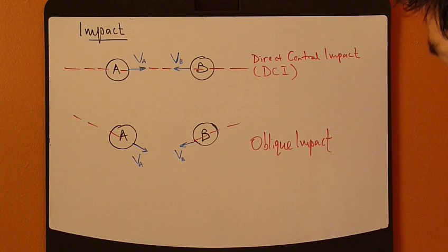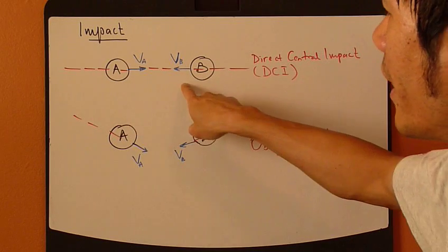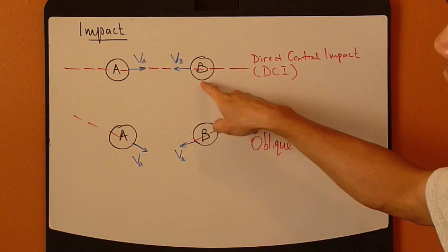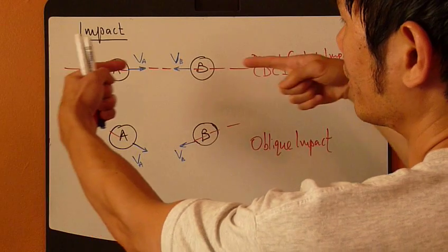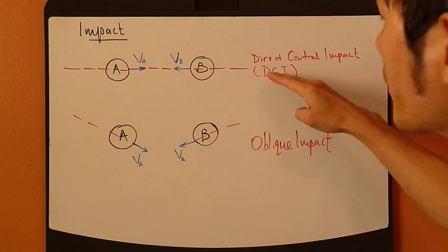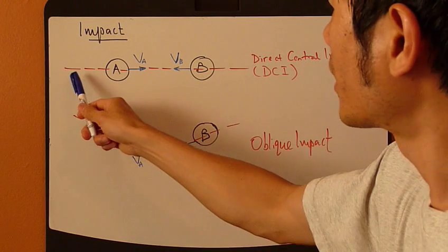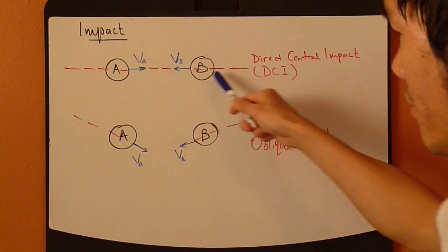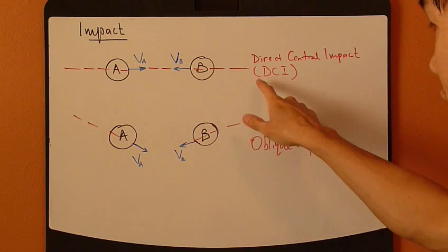There are two types of impact. First, it's called a head-on collision. When this first object A is colliding with the second particle B along the same direction — the same horizontal direction in this case — it's called direct central impact. This line right here, along the line of action, it's called the direct central impact direction, or DCI direction.